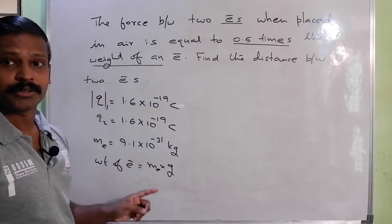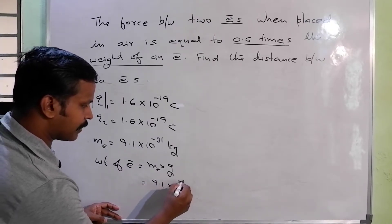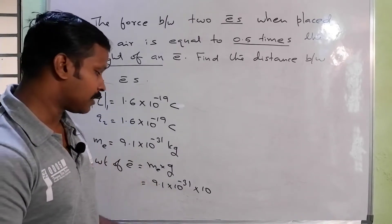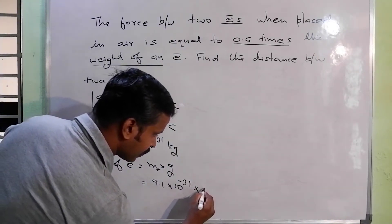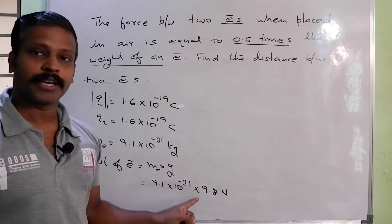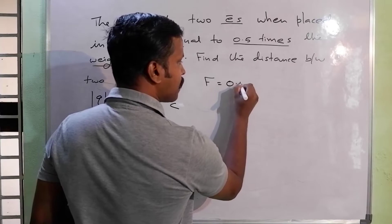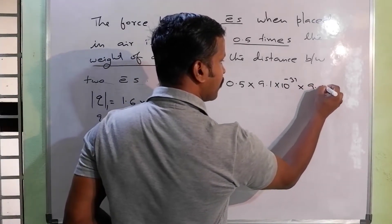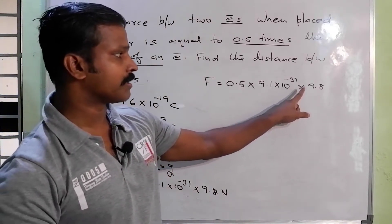Mass into the acceleration due to gravity — so we multiply by g. It is 9.1 into 10 raised to minus 31, mass into acceleration due to gravity, which is 9.8. So weight of an electron is 0.5 times the force. The force F equals 0.5 times 9.1 into 10 raised to minus 31 into 9.8 N.